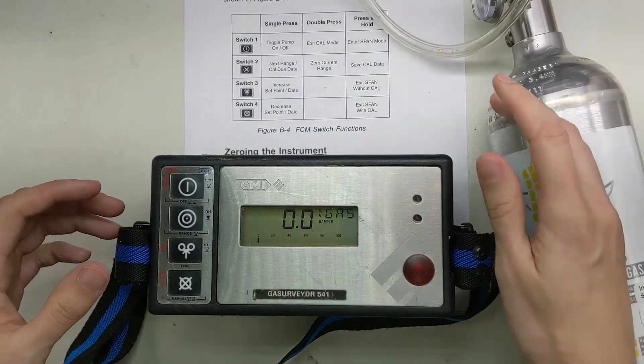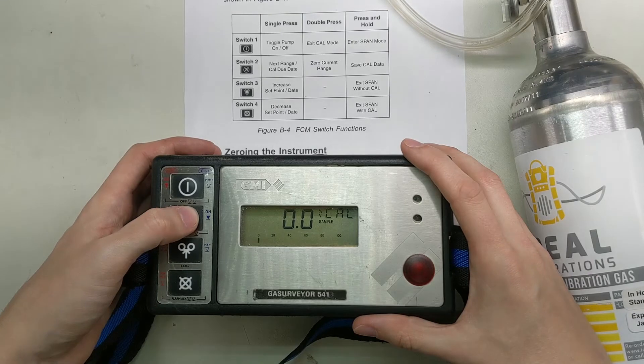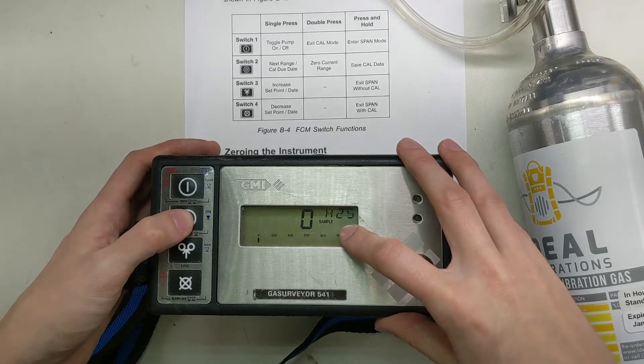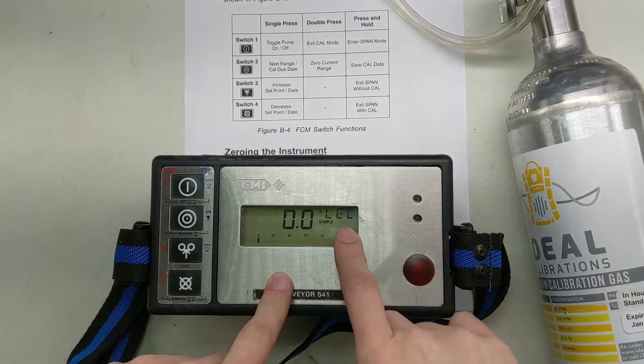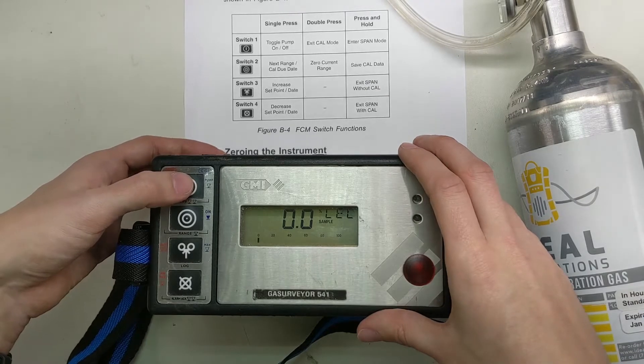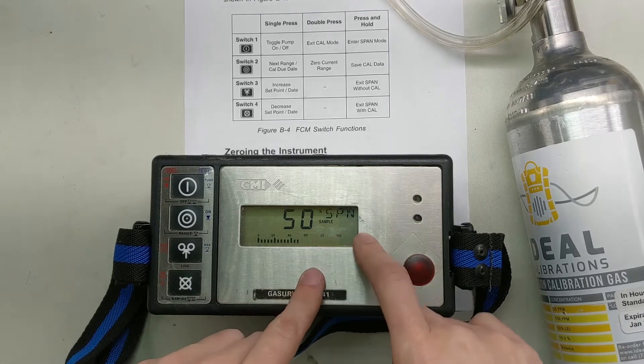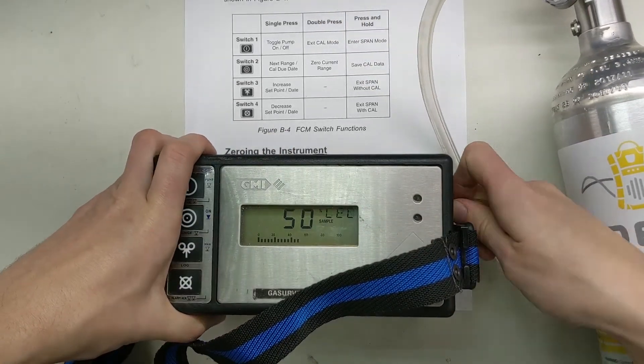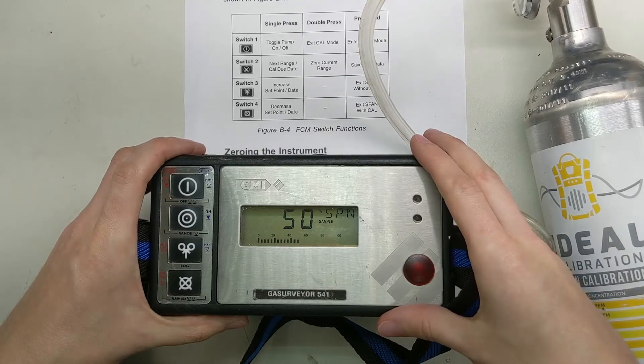Now this is going to be all ready. So now let's put this unit into the actual span mode. Right now we're looking at percent gas. In order to get ourselves into span mode, we're going to press and hold this power button here. Now you see the monitor goes to 50% and LEL span. This is what gas it's looking for right now. I'm going to put this on here. It's our 50% LEL gas.